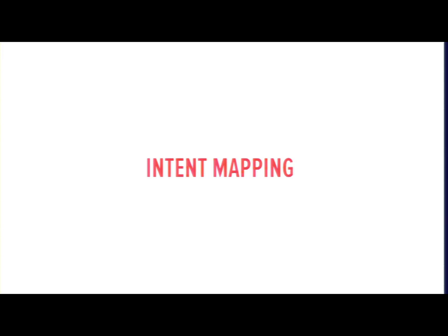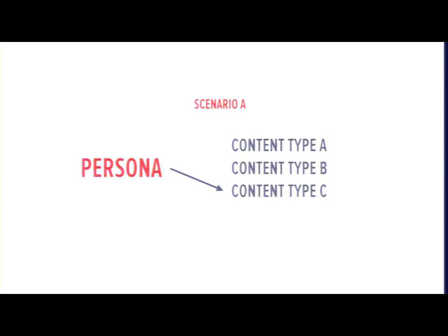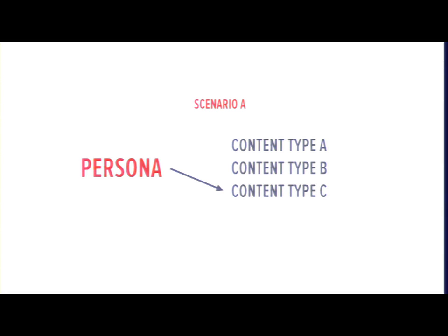If you have multiple personas describing the audiences you're designing for, you can use those same index cards and sort them again for each persona — using that as the metric for measuring what's important. At Lullabot we've been calling this intent mapping: taking a scenario that a persona would have and mapping the importance of each type of content or attribute for that persona.